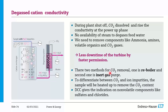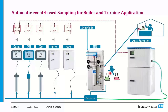We also have degassed conductivity for boiler startup operations. Additionally, consider automatic event-based sampling for boilers and turbines. Instead of lab personnel collecting samples on a regular routine, you set up events in your analyzer — for example, when silica content goes high or pH drops below 9, the analyzer triggers the sampler to collect a sample automatically. This avoids regular manual sampling and enables cross-verification with the laboratory only when an event occurs.